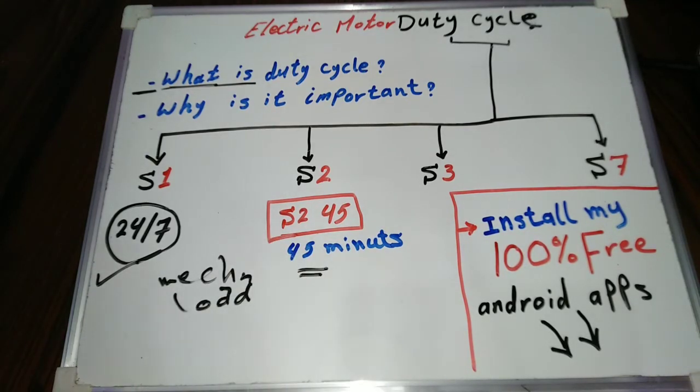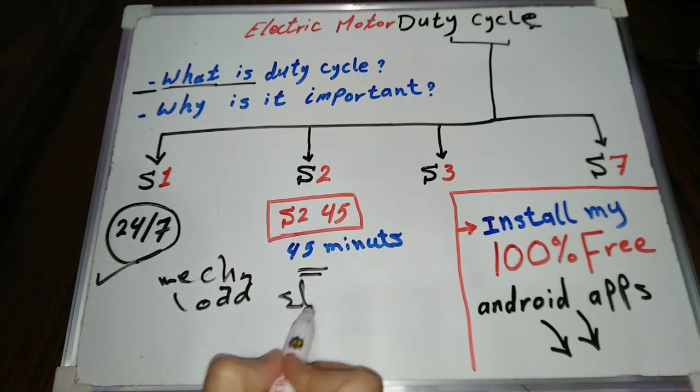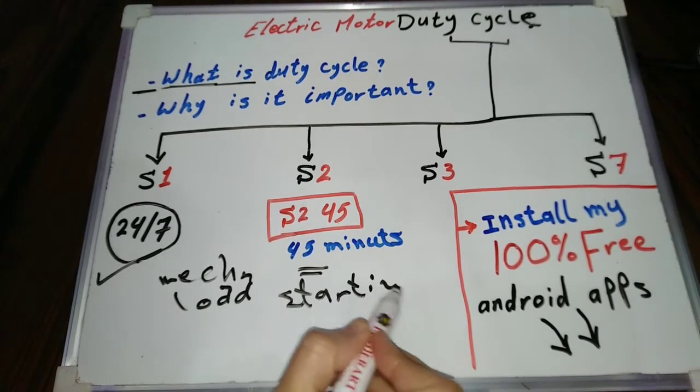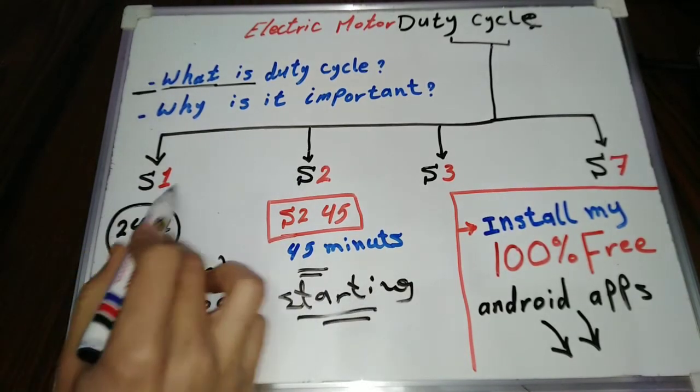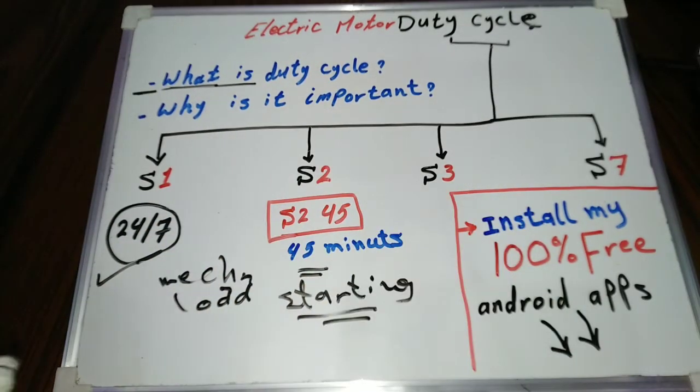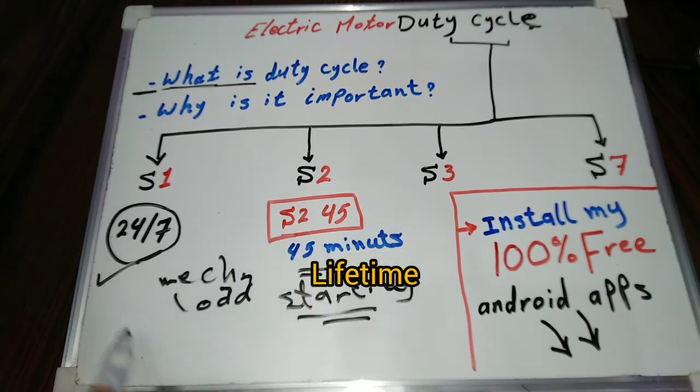For example, an electric generator starter motor requires short periods working with high starting current. So it's important to choose the proper motor duty cycle for the load. Choosing a motor with the wrong duty cycle will seriously affect the motor lifetime.